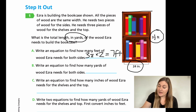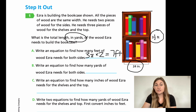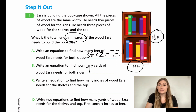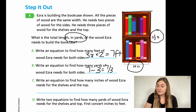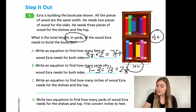For B, it says write an equation to find out how many yards of wood Ezra needs for both sides — now we're putting it into yards. Using that piece of paper, I see one yard equals three feet. So right now I have seven feet, and I need to figure out how to get from seven feet into yards. So seven feet divided by three — another way to write this is seven over three, and we put it into a mixed number. How many times does three go into seven? Twice, with one left over, so it would be two and one third yards.